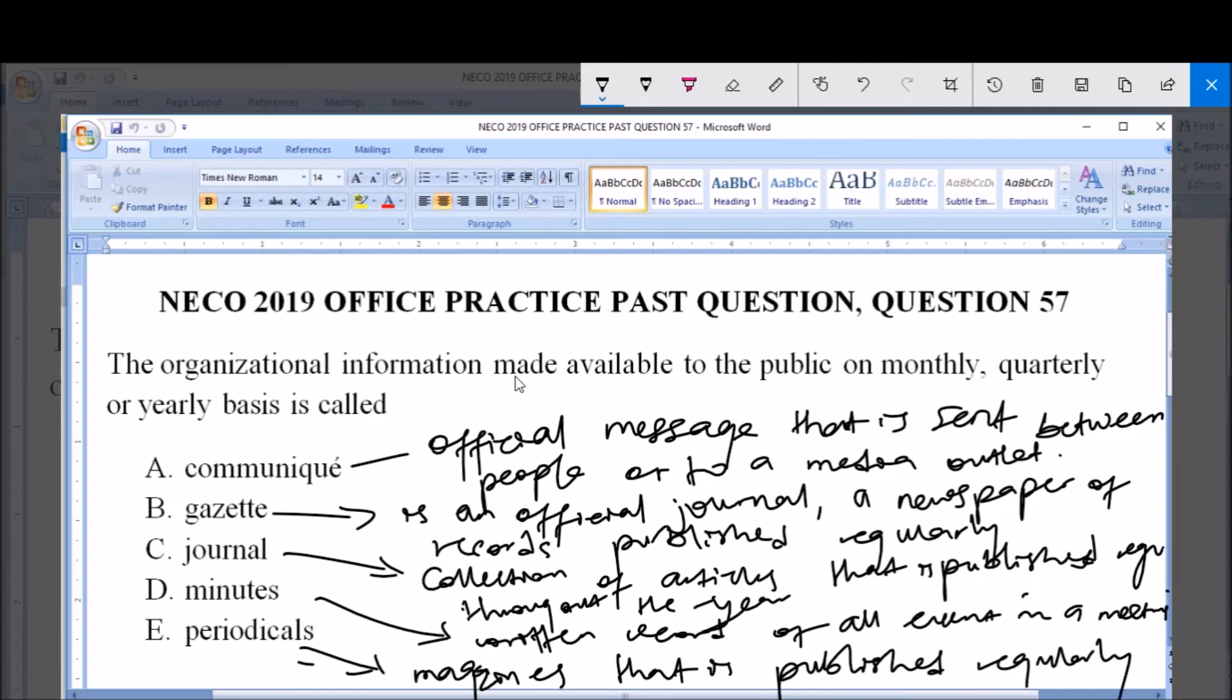Now, the question says, the organizational information made available to public on monthly, quarterly or yearly basis is called. Now, I want you to understand that it is a Gazette. A Gazette because a Gazette is an official journal that is a journal of an organization that is usually published regularly to give information to the public about such organization.